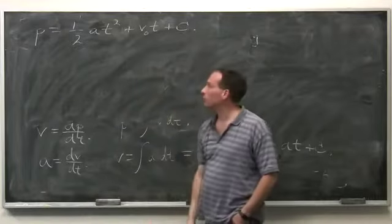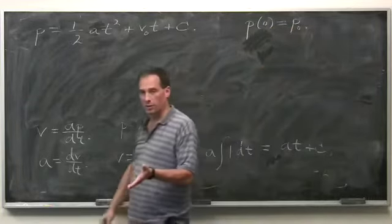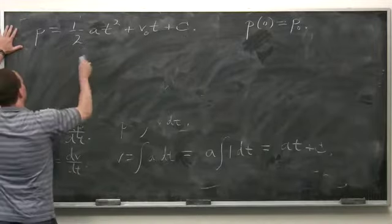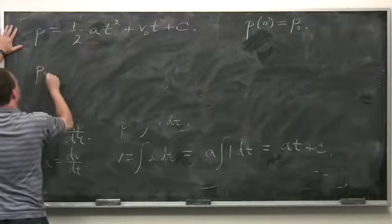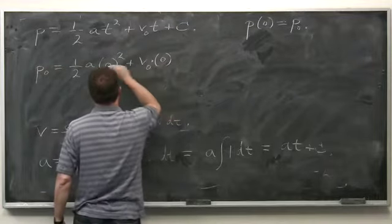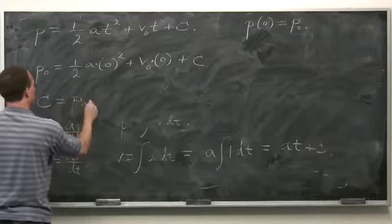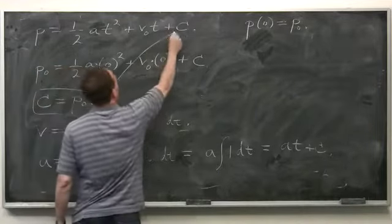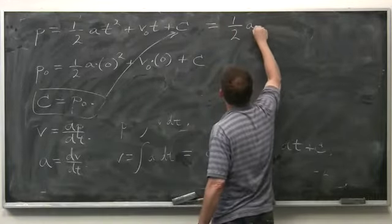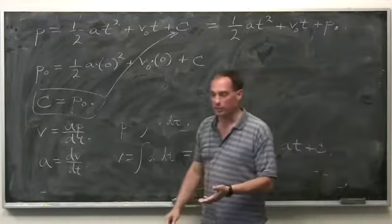We'd like to give this new constant physical meaning, so again we plug in the tautological initial data: the position at time 0 is p₀. Plugging in t equals 0 gives p₀ equals 0 plus 0 plus c, so c equals p₀. Our solution for position is p equals one-half at squared plus v₀t plus p₀.